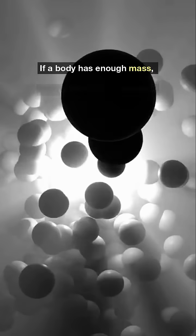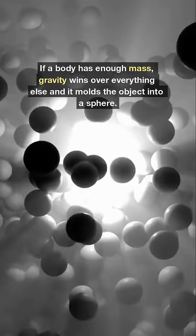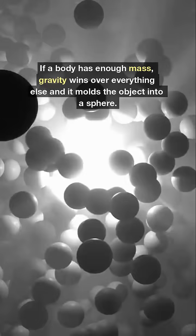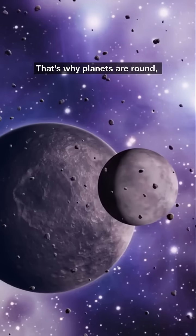If a body has enough mass, gravity wins over everything else, and it molds the object into a sphere. That's why planets are round.